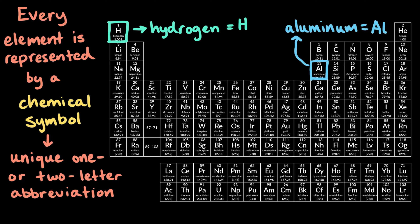But some chemical symbols are based on the Latin name for the element. For example, the symbol for lead is Pb, which actually comes from its Latin name, plumbum. Notice that whenever the chemical symbol for an element has two letters, the second letter is written in lowercase.